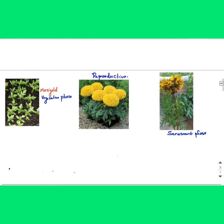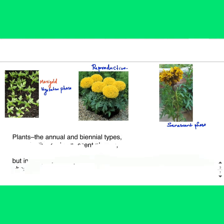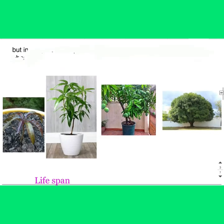Marigold's lifespan is a maximum of one year; it completes its life cycle within one year. Such plants are called annuals. Plants that complete the life cycle within two years are called biennials. In annuals and biennials, you can see clear-cut vegetative, reproductive, and senescent phases.